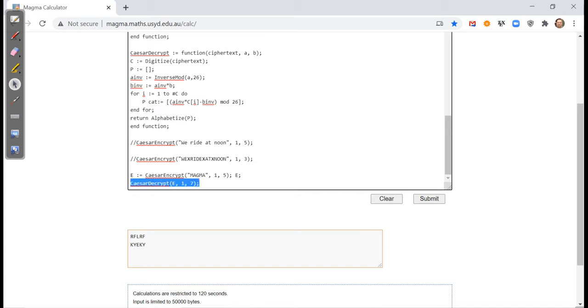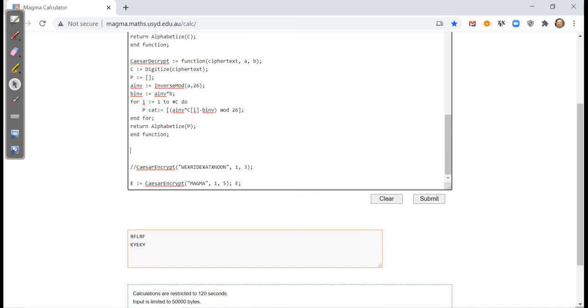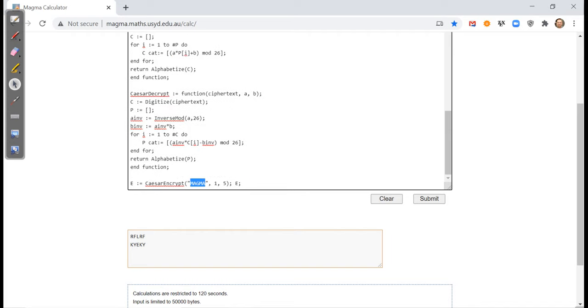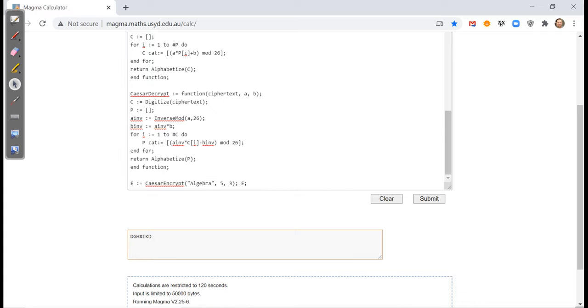So we want to encrypt the message algebra. I'm doing lowercase. The previous was uppercase alphabetized and digitized. They don't care. They're not case sensitive here. So if we encrypt using A was five and B was three, if we run that, we're going to get the message DGHXIKD.